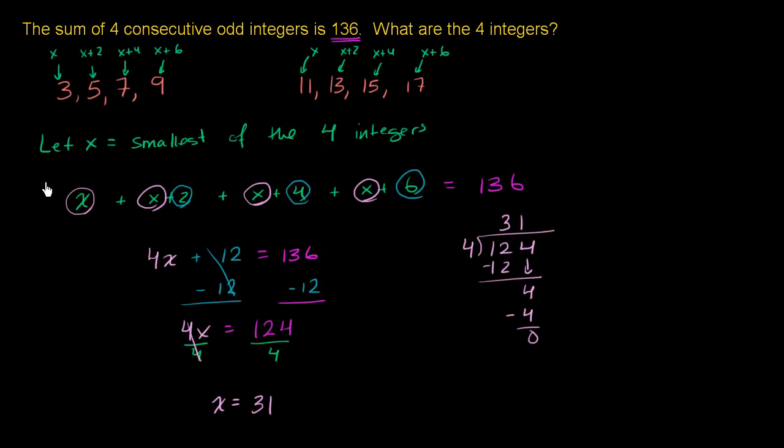x is the smallest of the four integers. So x is 31, x plus 2 is going to be 33, x plus 4 is going to be 35, and x plus 6 is going to be 37. So our four consecutive odd integers are 31, 33, 35, and 37.